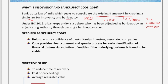Under IBC 2016, a bankrupt entity is a debtor. Suppose there is a debtor company that has taken loans from many creditors. This pool of creditors may involve government agencies, financial creditors, operational creditors, bondholders, and many more.